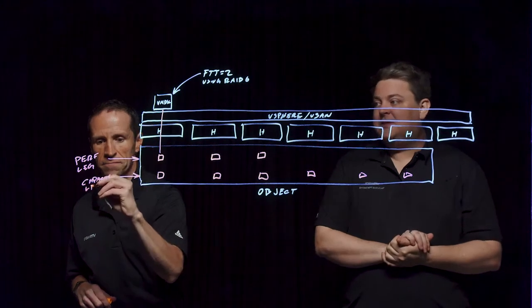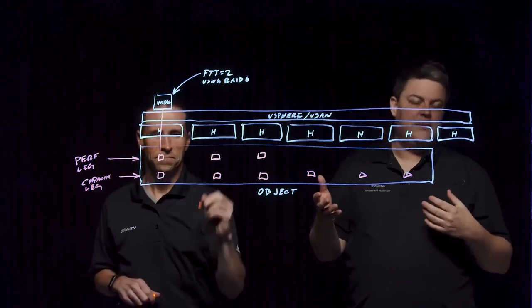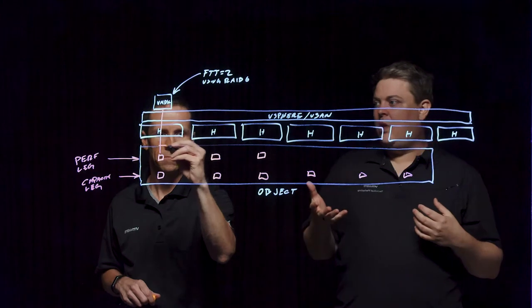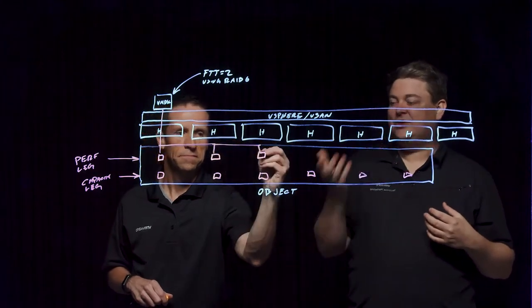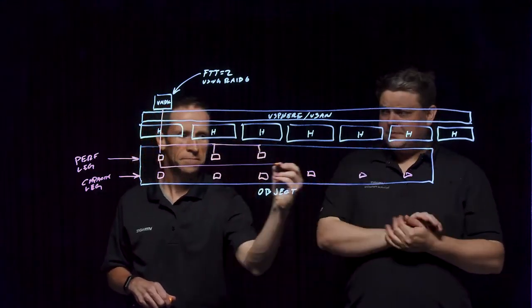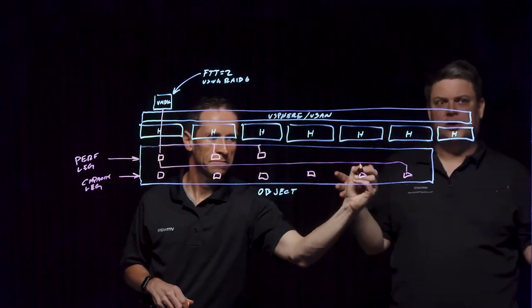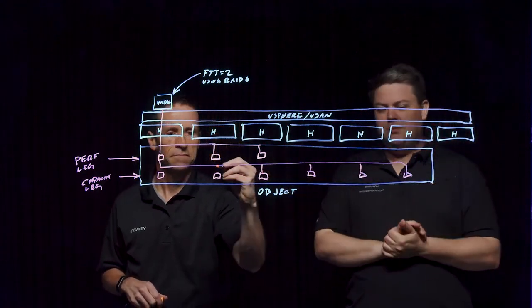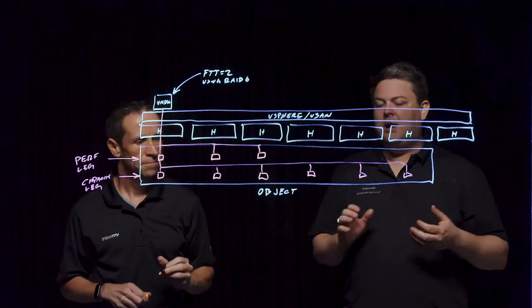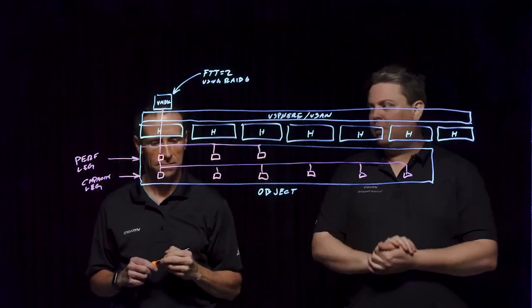By getting these benefits where the performance very much behaves as RAID 1 using the performance leg, the initial writes land on a mirrored structure, and then the capacity leg structure where that data goes out to for the capacity overhead. This gives us the best of both worlds.